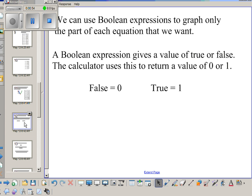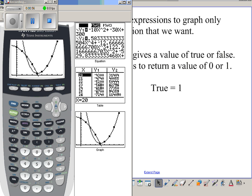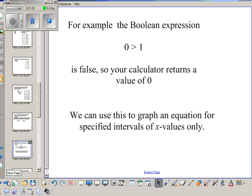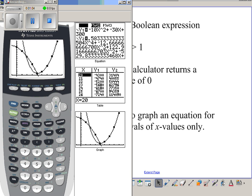So if your statement is false, the calculator returns zero. And if the statement is true, the calculator returns one. For example, zero is greater than one is false.